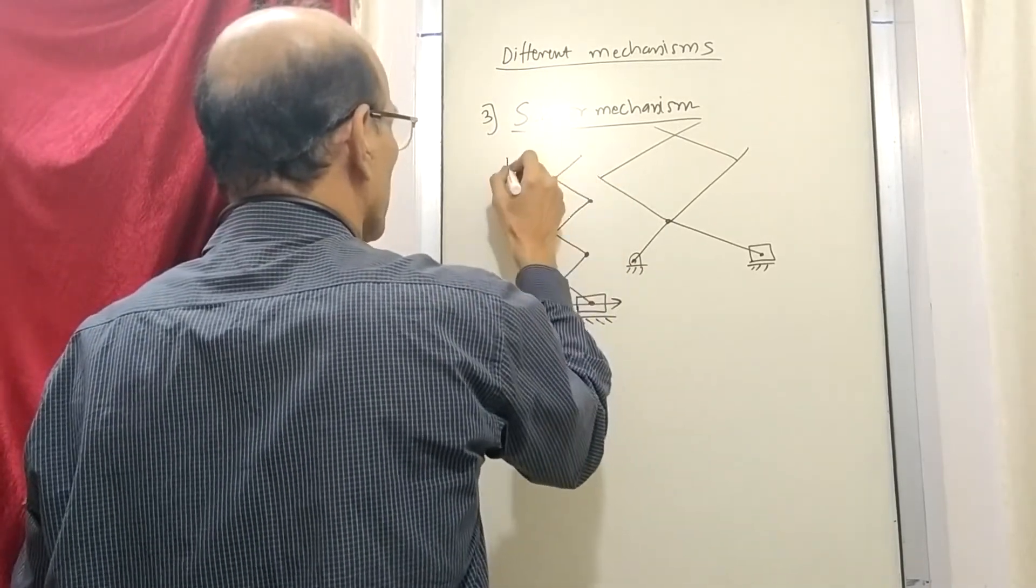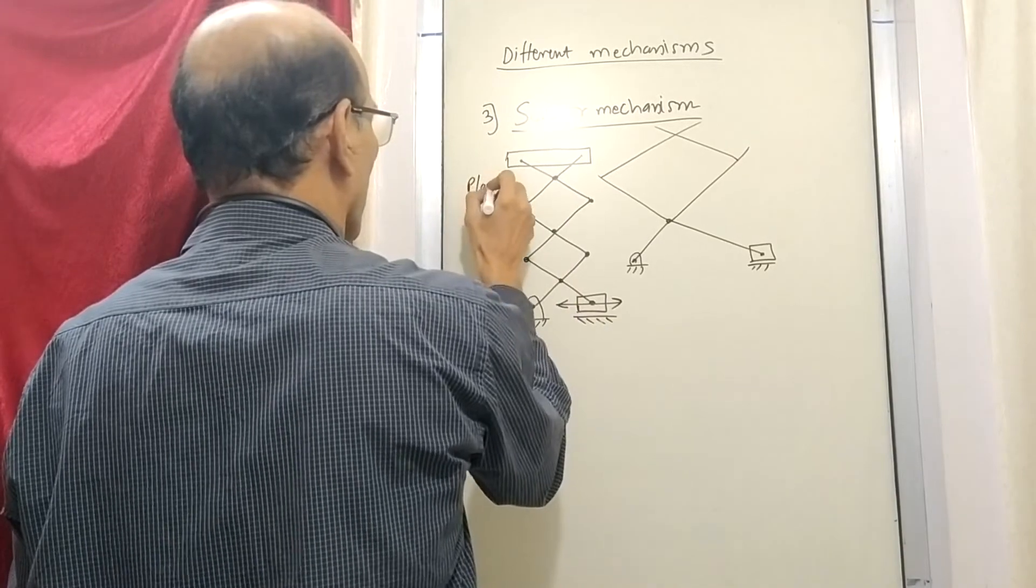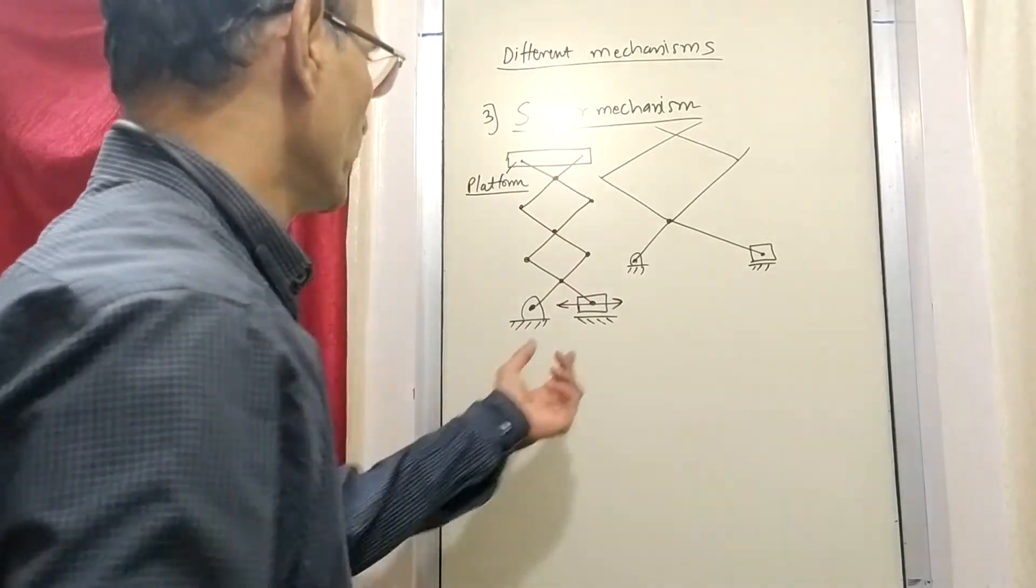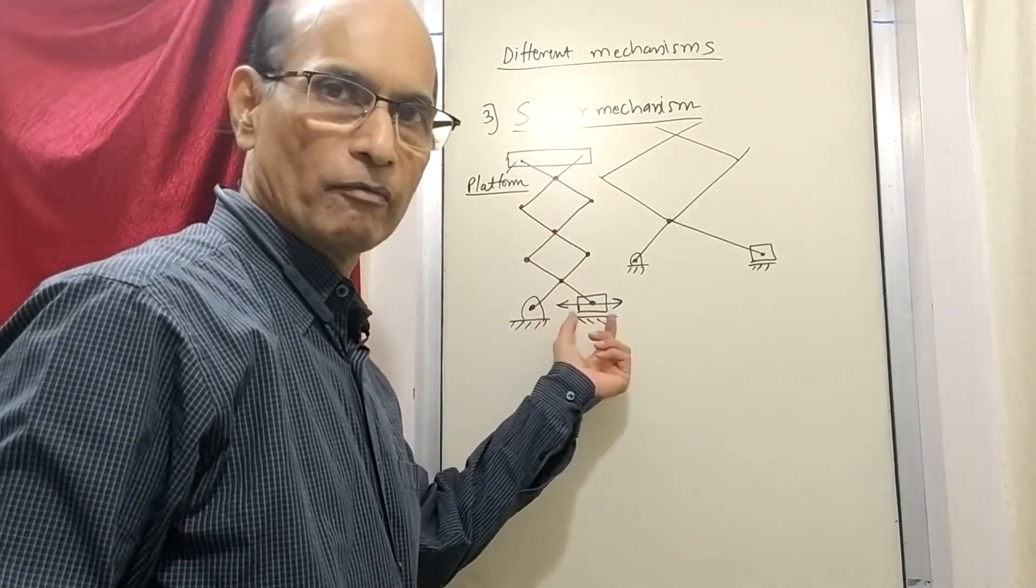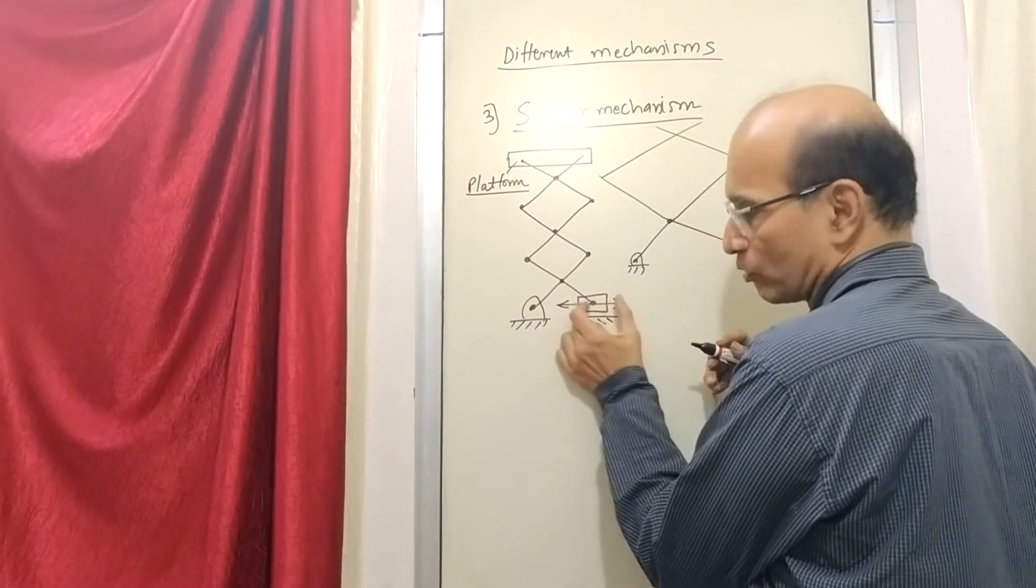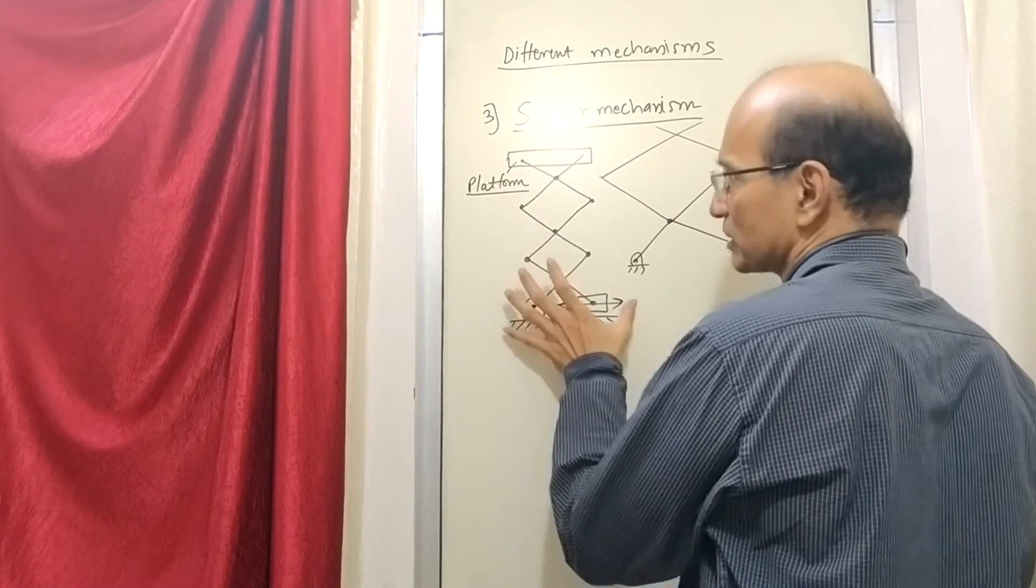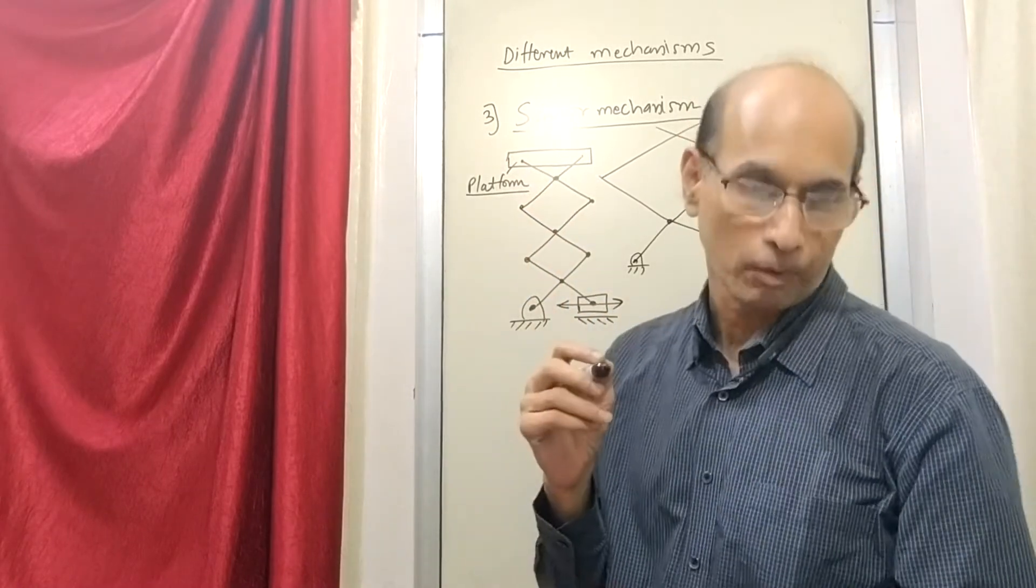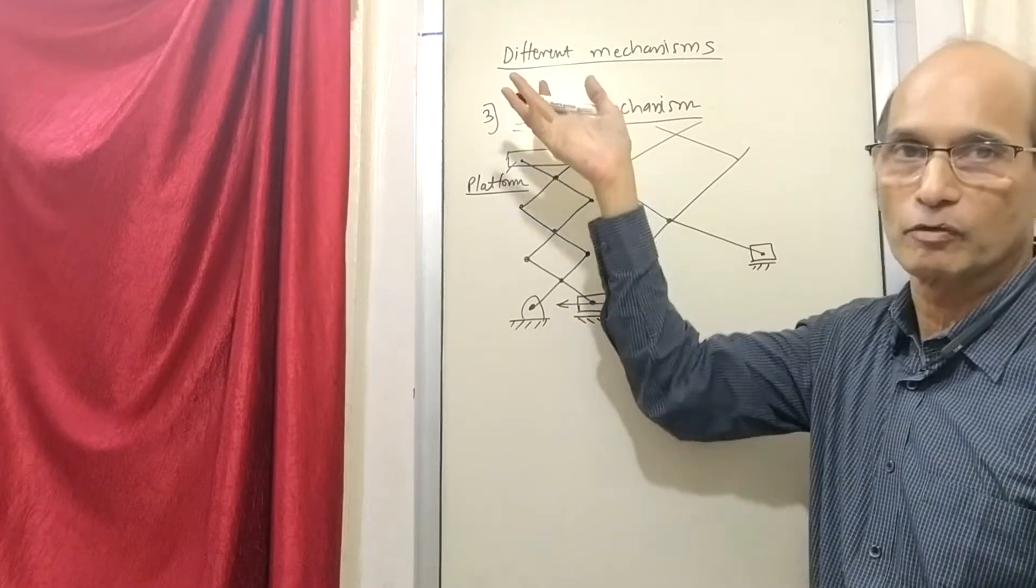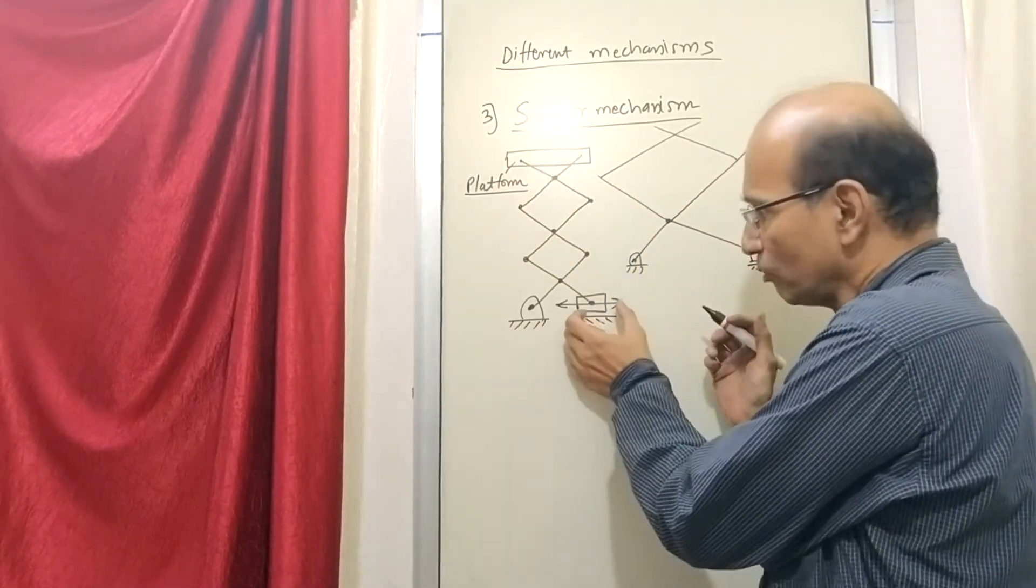So what they do here is here they are fixing one platform. There is a platform here. When you are moving it, very slight movement when you perform here, when the slider is performing sliding motion like this, the platform is lifted up.